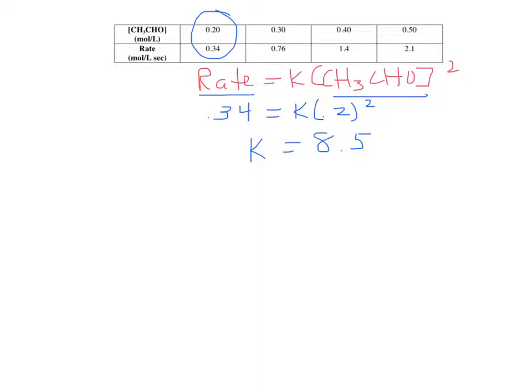So finding K is actually pretty easy. Now the fun part, or not so much fun, is finding the units for K. Unfortunately, they're different every time. It depends on what the order of the reaction is. So we're going to do is try it with this one. So we're going to take this equation right here, and we're going to plug in units.